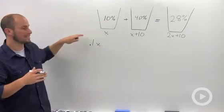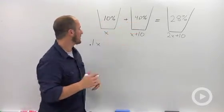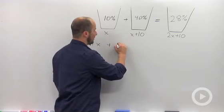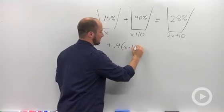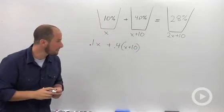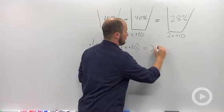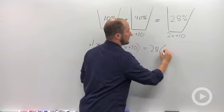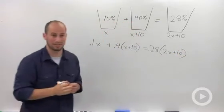So this one turns out to be 0.1 times x. Remember when you're turning a percentage into a decimal, move the decimal place over two spots. Same idea for this one. 40% turns into 0.4 times our quantity x plus 10. And the last one over here, 28%, 0.28 times the amount of liquid, 2x plus 10.